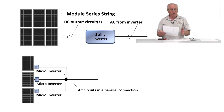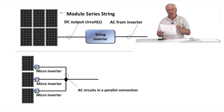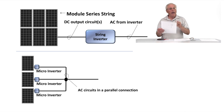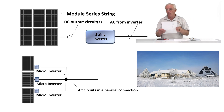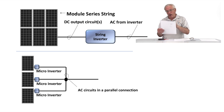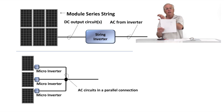For a quick overview: the first drawing shows a string system where all modules are connected in a series string going to one inverter, which then services your home. Below that is my own pole-mounted system, which uses micro inverters — instead of one inverter, each module has a single inverter attached to the DC circuit at the back. The micro inverters produce AC current and ship it into my house through parallel connections of all those micro inverters connected together.